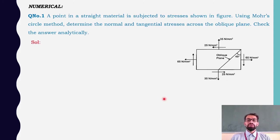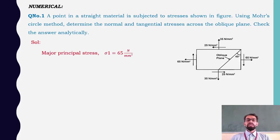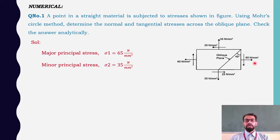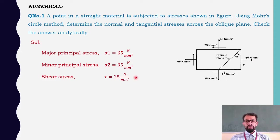Let us write down the given values. Major principal stress sigma 1 = 65 N/mm², minor principal stress sigma 2 = 35 N/mm², shear stress tau = 25 N/mm², and the angle of the oblique plane theta = 45 degrees.